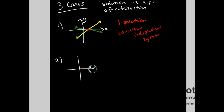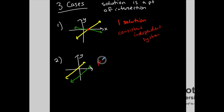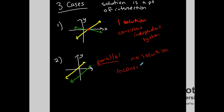The second case: I can graph two lines and they are parallel. If I have parallel lines, what do I know? They never intersect. If they never intersect, then there is no solution — no point of intersection, no point that satisfies both lines. This is called an inconsistent system.